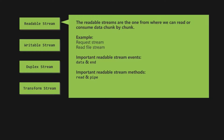Readable streams are the ones from where we can read or consume data. For example, when we send a request to the Node server, the request data received on the server comes through a readable stream — so the data arrives in chunks, not all at once. Another example is reading a file piece by piece using create read stream from the fs module, which is useful for large text files. An important thing to note is that streams are actually instances of the event emitter class, meaning all types of streams can emit and listen to named events.